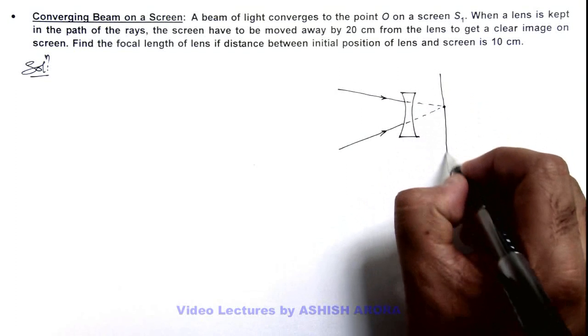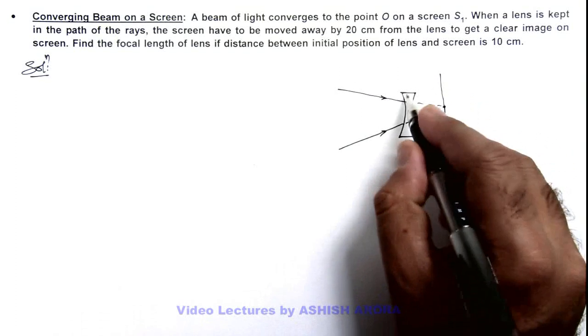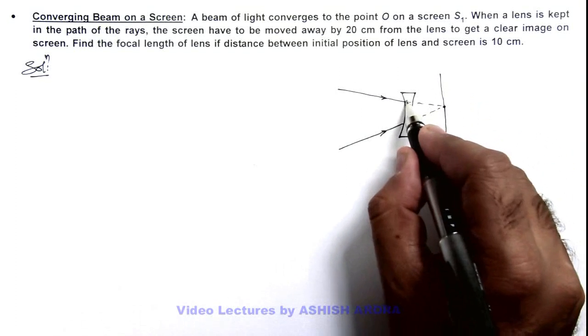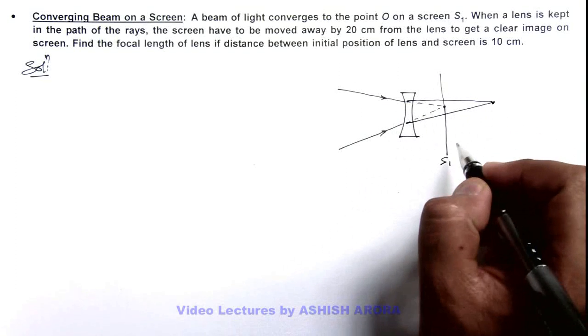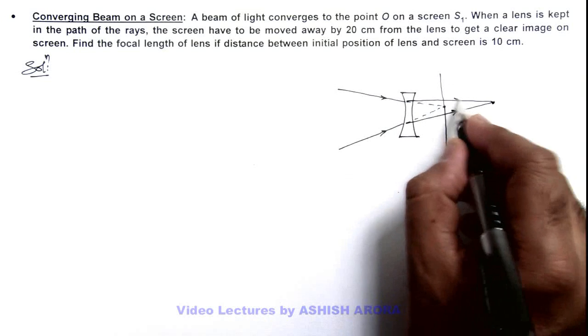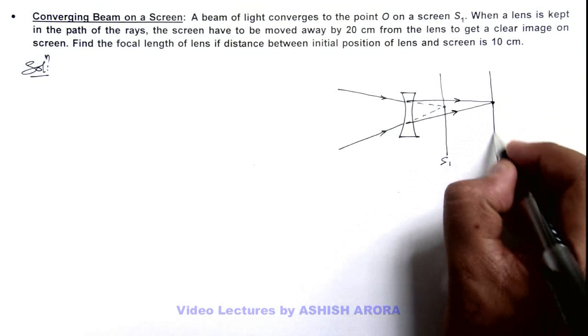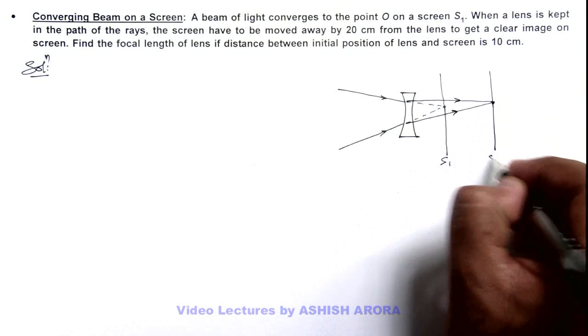which is on screen S1, as soon as the lens is placed it diverges the beam and focuses it to some other point which is away from the initial point, and the screen is to be moved to position S2.